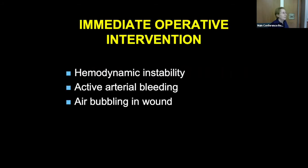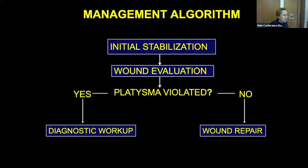The general approach to management hasn't really changed over the years. Any patient that's hemodynamically unstable or has an obvious clear injury — active arterial bleeding squirting or air bubbling in the wound — these patients need to go to the OR, no question. Simple initial algorithm: stabilize them, look at the wound. Is the platysma violated? If yes, you have to do more, because that's suggesting a deep injury — you don't know how deep. Even if it looks tiny, it can go very deep given all the structures in the neck.